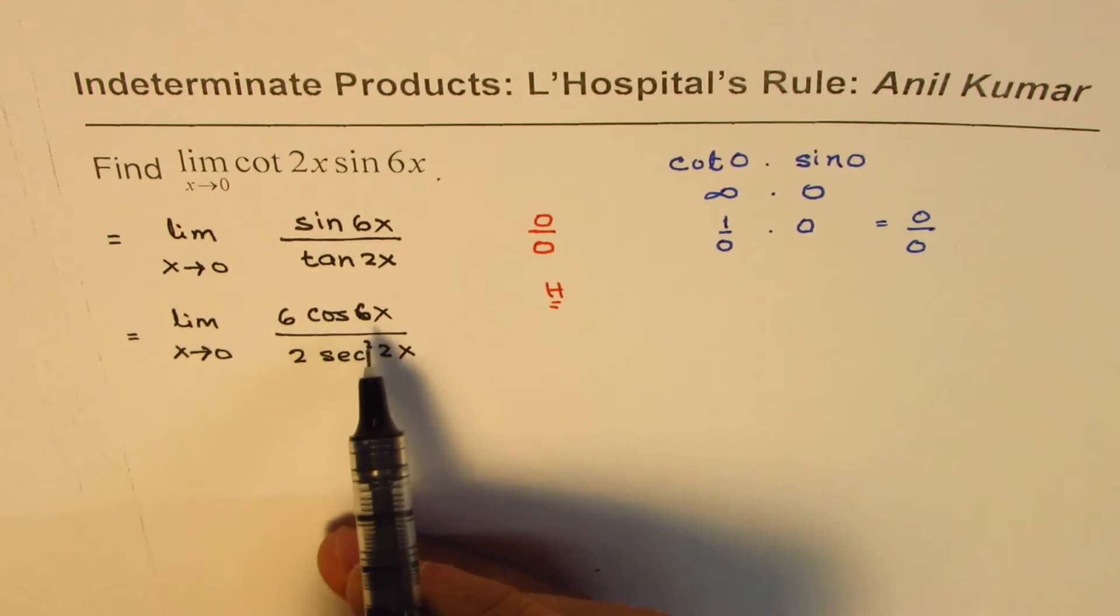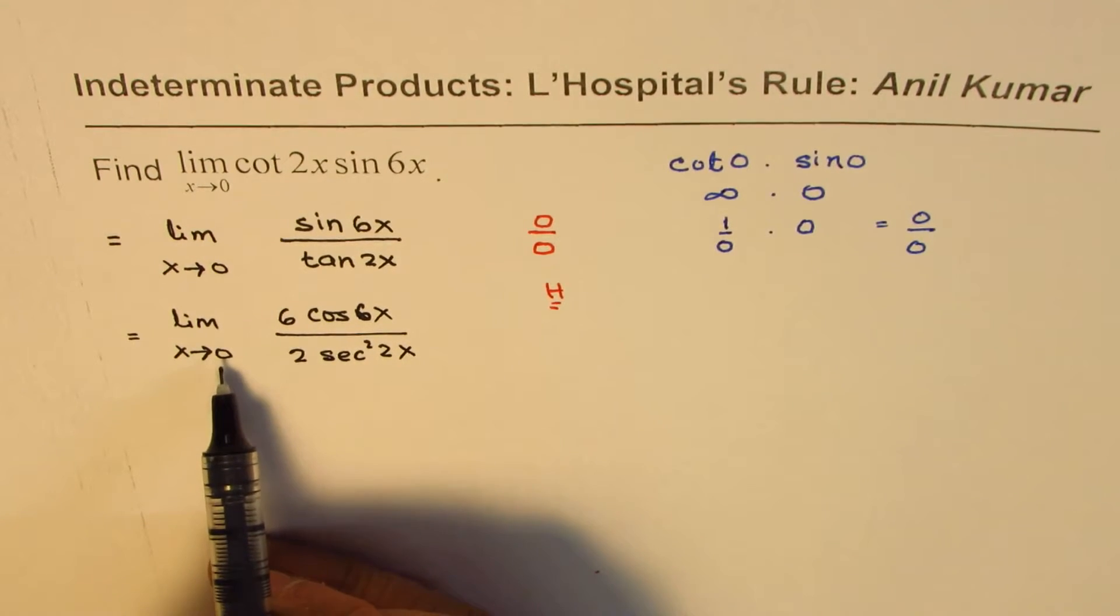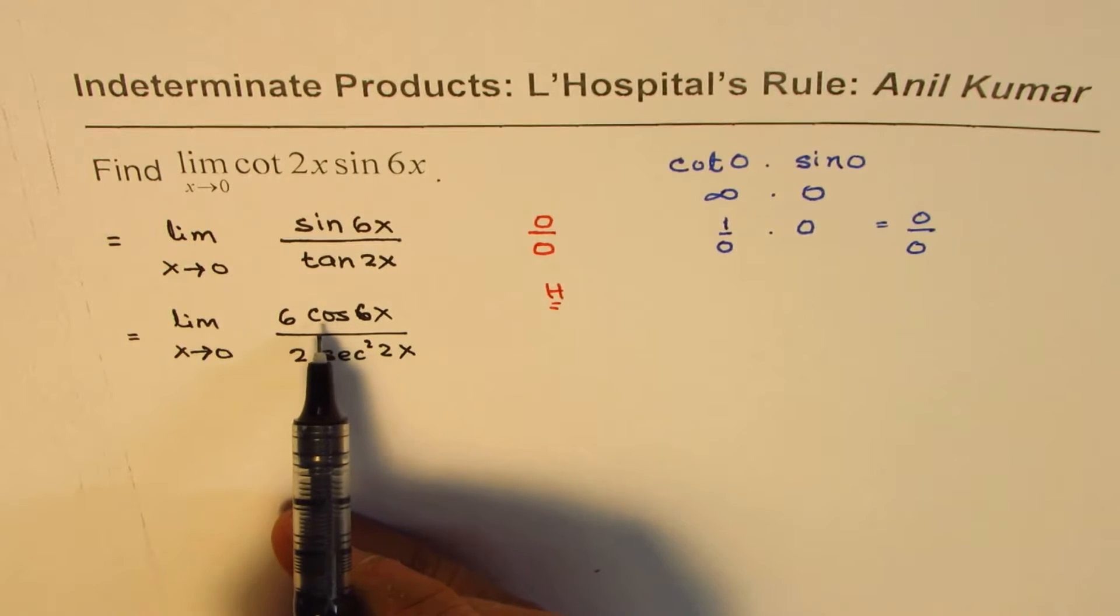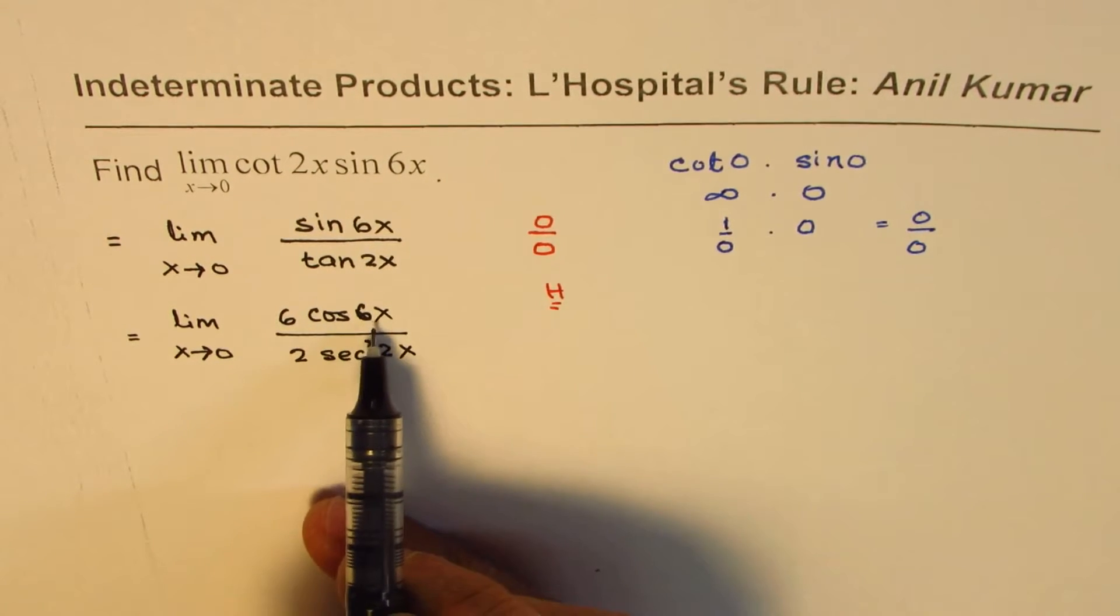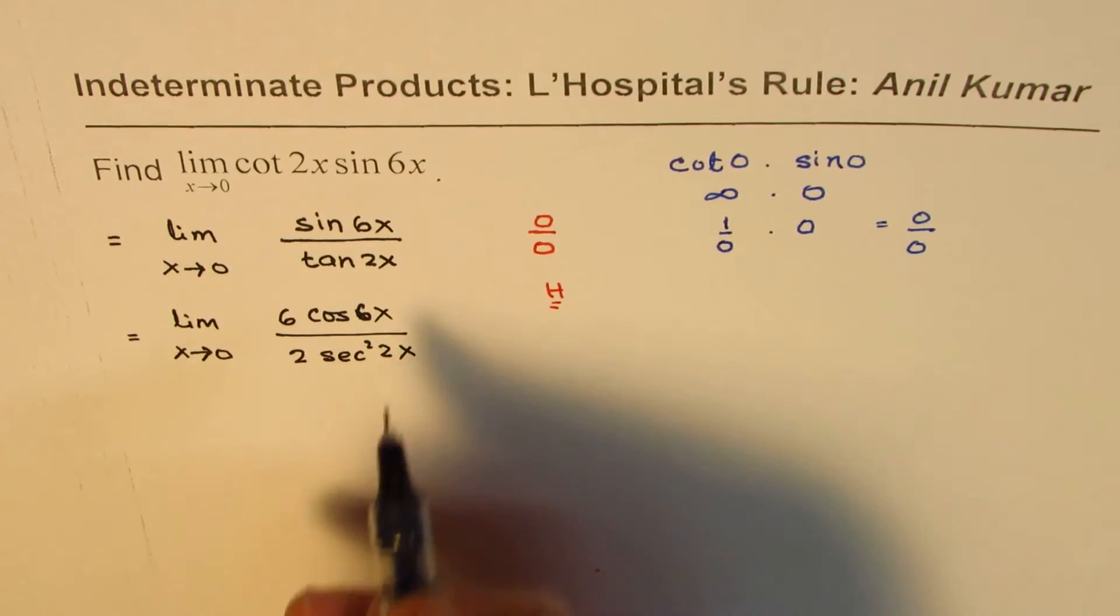Now again, we can actually substitute 0 here. If I substitute 0, cos 0 will become 1, and secant 0 will also be 1. So we can find the answer.